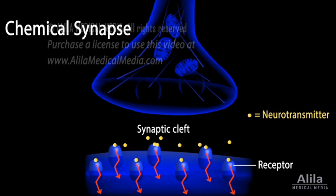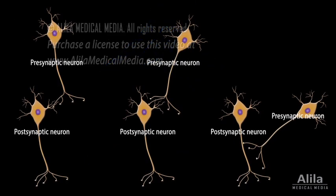The neuron that releases the neurotransmitter is the presynaptic neuron, while the one that receives the signal is the postsynaptic neuron. The axon of the presynaptic neuron may form a synapse with either a dendrite, the cell body, or the axon of the postsynaptic neuron, giving rise to axodendritic, axosomatic, or axoaxonic synapse, respectively.